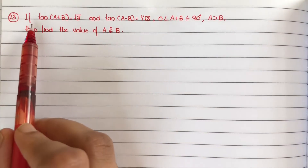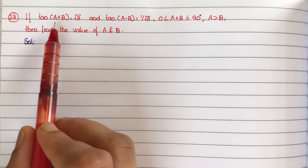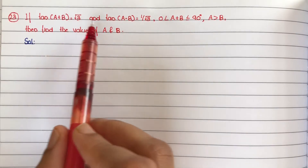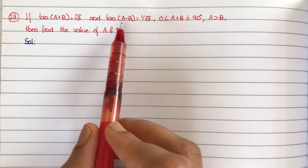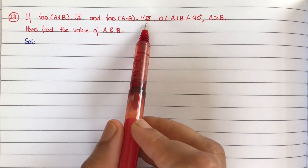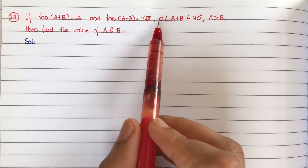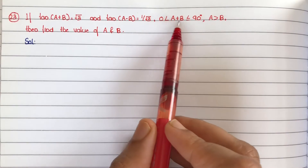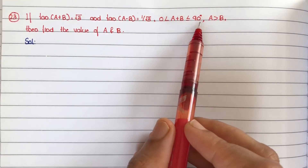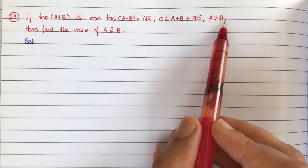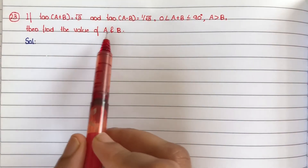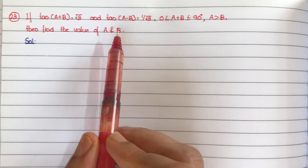Question number 23: if tan(a+b) is equal to root 3 and tan(a-b) is equal to 1 by root 3, with 0 less than a+b less than or equal to 90 degrees, and a greater than b, then find the value of a and b.